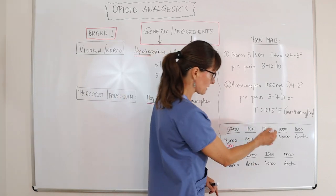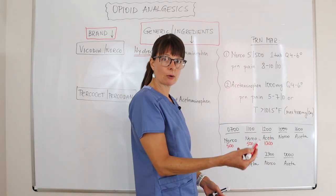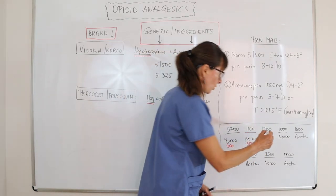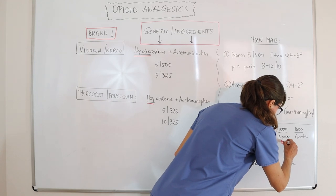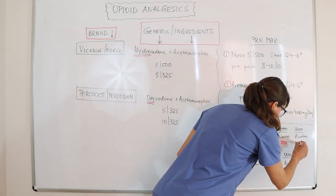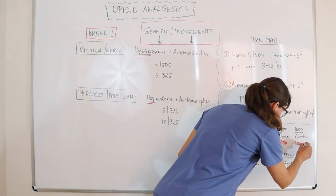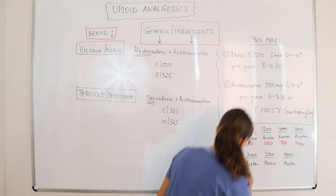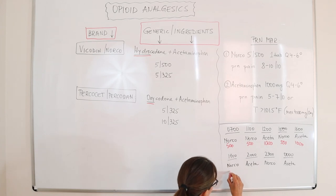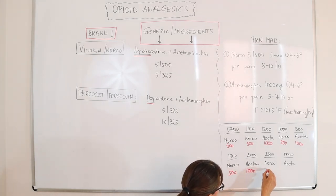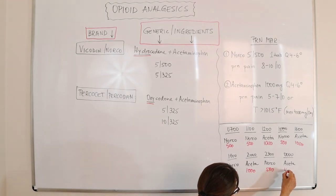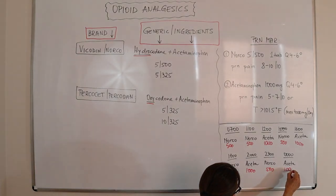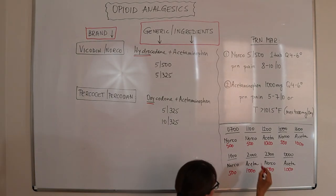Spacing these out — essentially every four hours giving one or the other — in total the patient receives 1,000 milligrams of standalone acetaminophen and 500 milligrams of acetaminophen from the Norco each time.